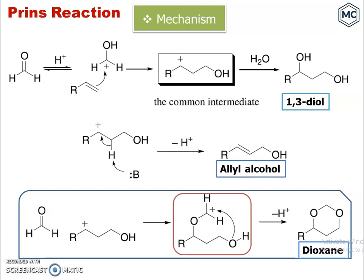This intermediate can undergo an intramolecular cyclization reaction where the oxygen attacks the carbonyl position, forming a dioxane. This slide gives an outline of the mechanism of the Prins reaction.